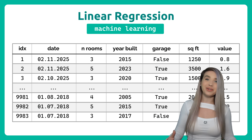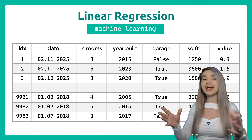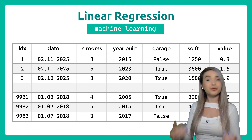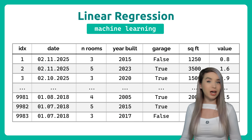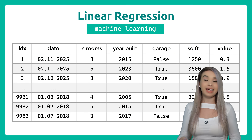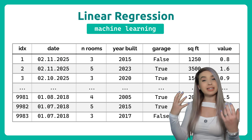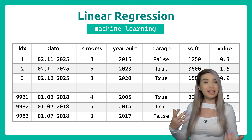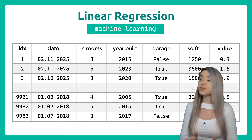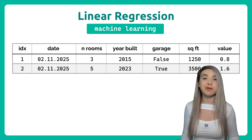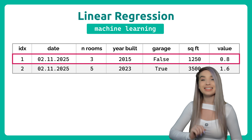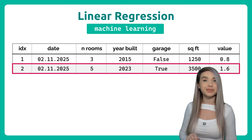So let's say we have this giant table full of historic housing data. And to keep things simple, let's say that we only have two samples — sample 1 and sample 2.